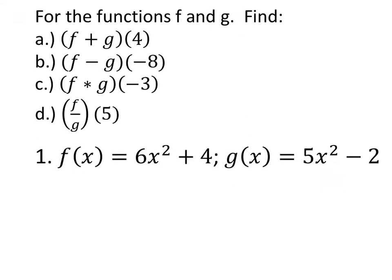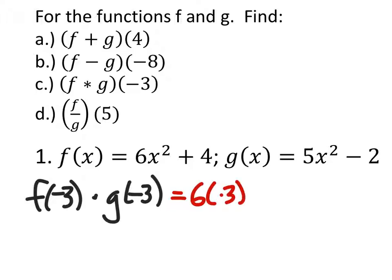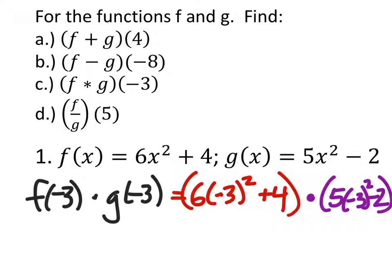Let's do f times g of negative three. So, we got f of negative three times g of negative three. So, my f of negative three would be six times negative three squared plus four. And then, I guess I should put this in parentheses as well, just because of the order of operations. And then, I would multiply this by g of x, which would be five times negative three squared minus two.